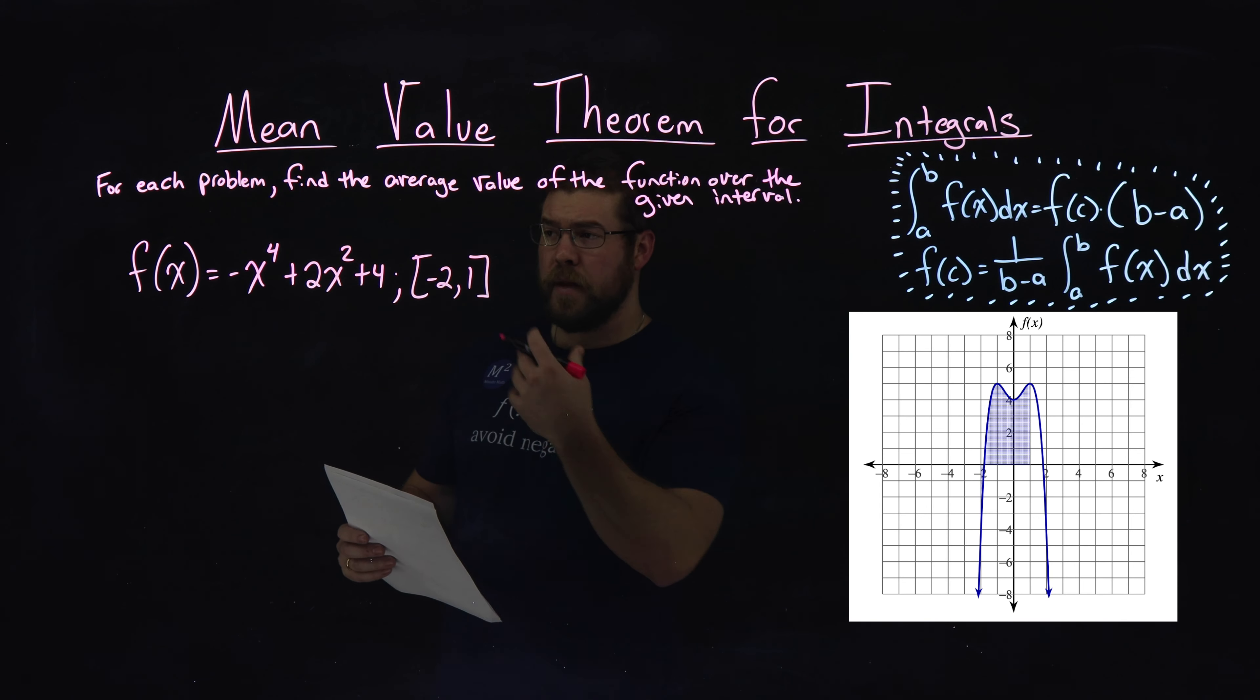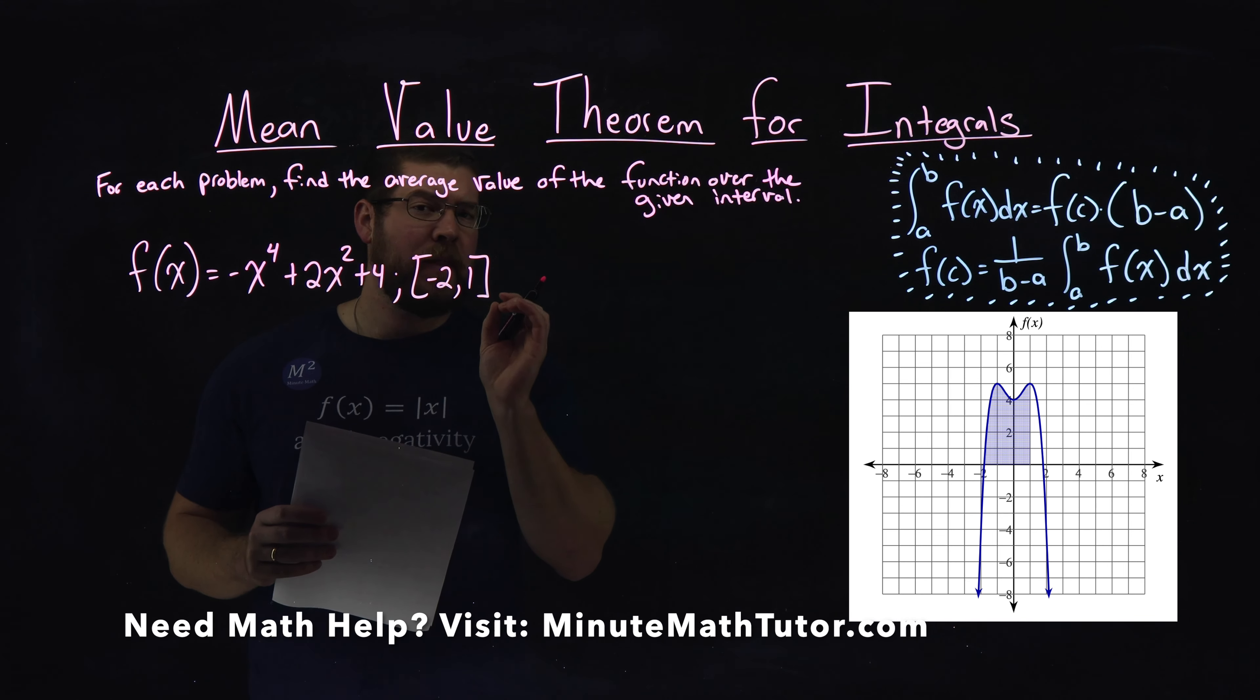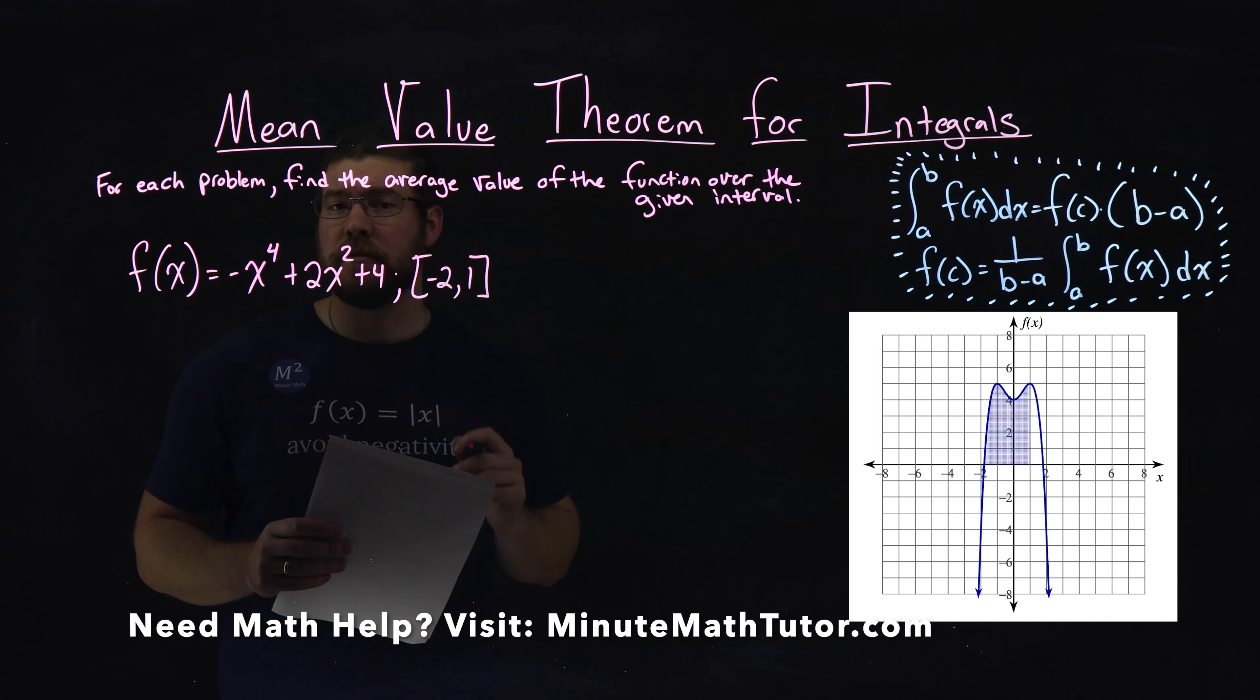We're given this problem right here: f(x) equals negative x to the fourth plus 2x squared plus 4, and we want to find the average value over the interval from negative 2 to 1.